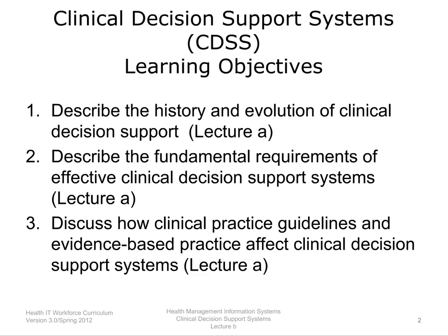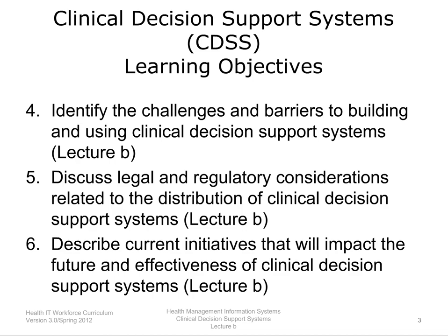The objectives for this unit, Clinical Decision Support Systems, are to: describe the history and evolution of clinical decision support; describe the fundamental requirements of effective clinical decision support systems; discuss how clinical practice guidelines and evidence-based practice affect clinical decision support systems; identify the challenges and barriers to building and using clinical decision support systems; discuss legal and regulatory considerations related to the distribution of clinical decision support systems; and describe current initiatives that will impact the future and effectiveness of clinical decision support systems.